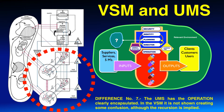Difference number seven: the UMS has the operation clearly encapsulated. In the VSM it is not shown, creating some confusion, although the recursion is implied.